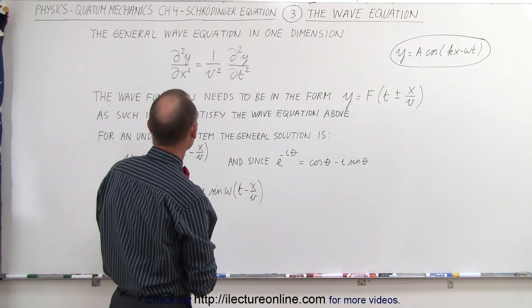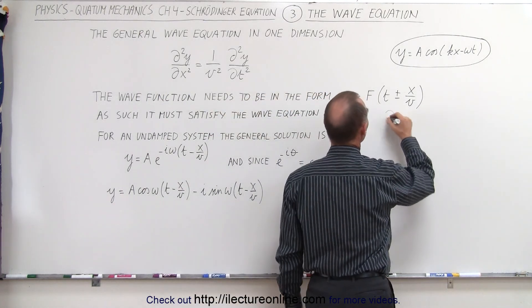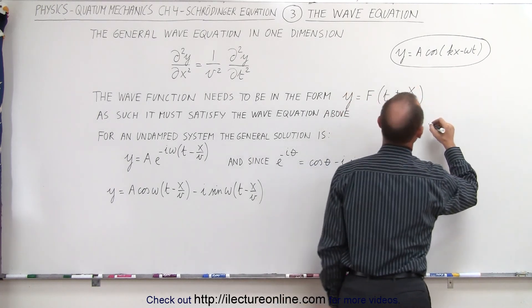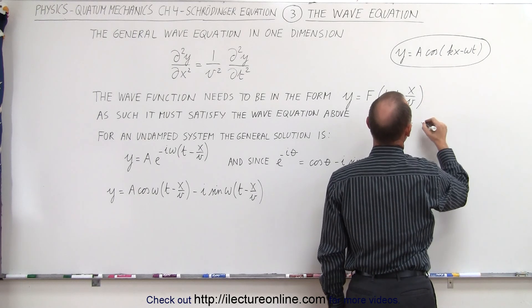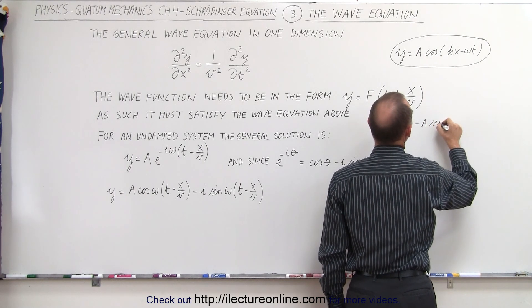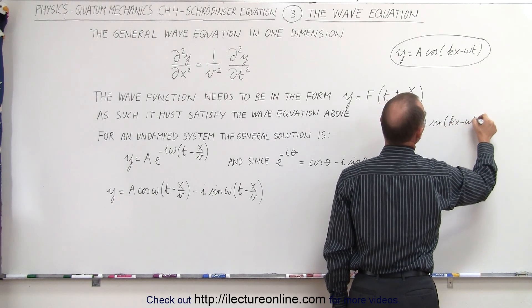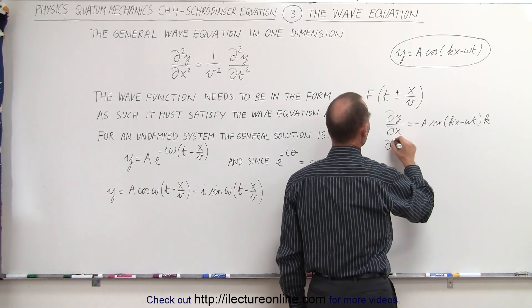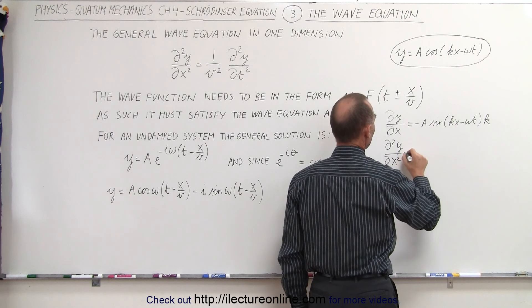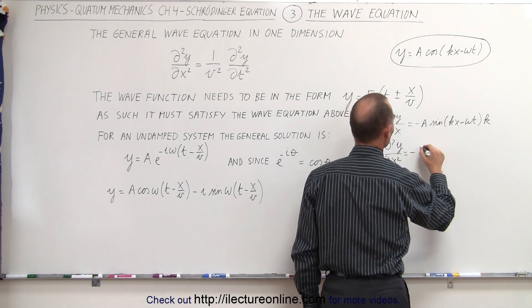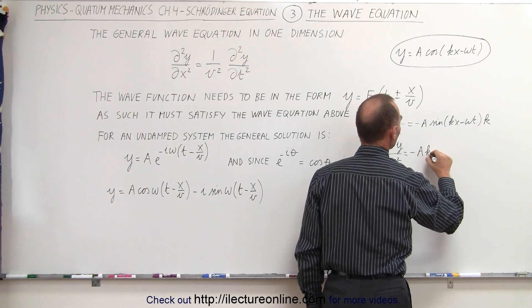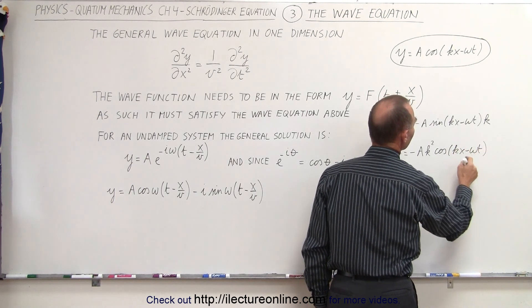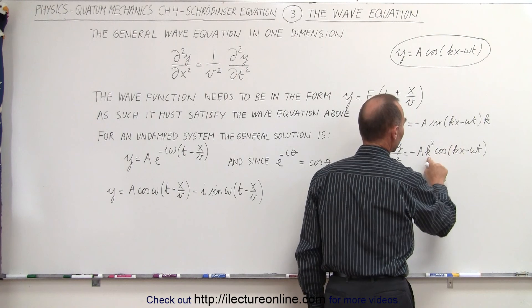Let's take the partial derivative of y with respect to x. The derivative of cosine is negative sine, so that's minus A times the sine of kx minus omega t, times the derivative of this with respect to x, which is k. If we now take the second derivative of that with respect to x, the derivative of sine is cosine, so we get minus A times k squared times the cosine of kx minus omega t — because k times k gives you k squared.